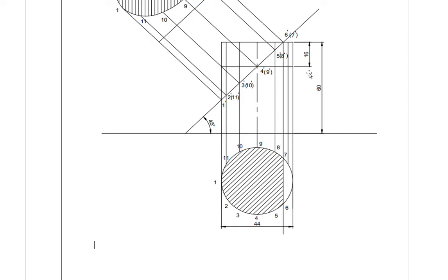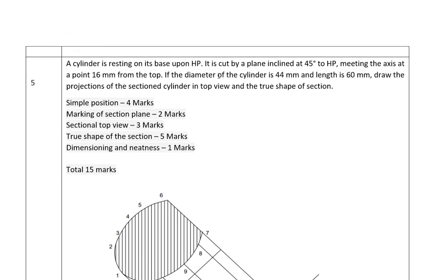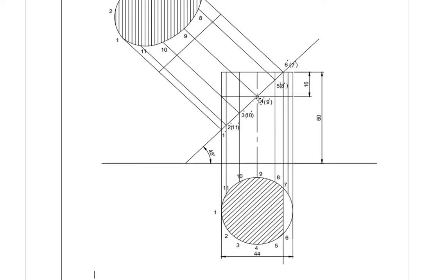Since the section plane is passing through a point at a distance of 16mm from the top face, you mark 16mm from here and draw a straight line at the given angle of 45 degrees. First mark a point at 16mm from the top, draw a straight line, and through that point draw a line at 45 degrees. This section plane will meet some points here.